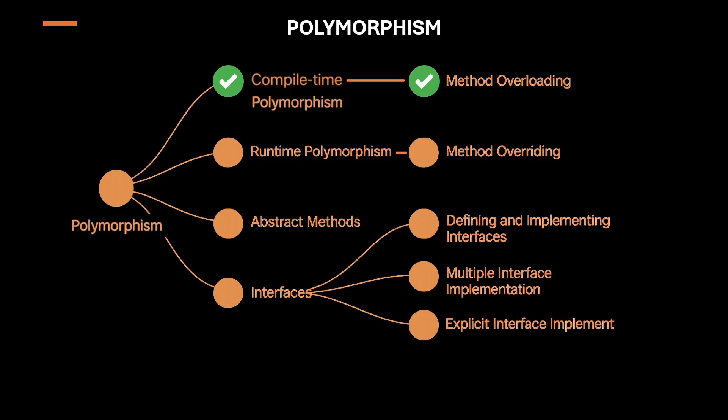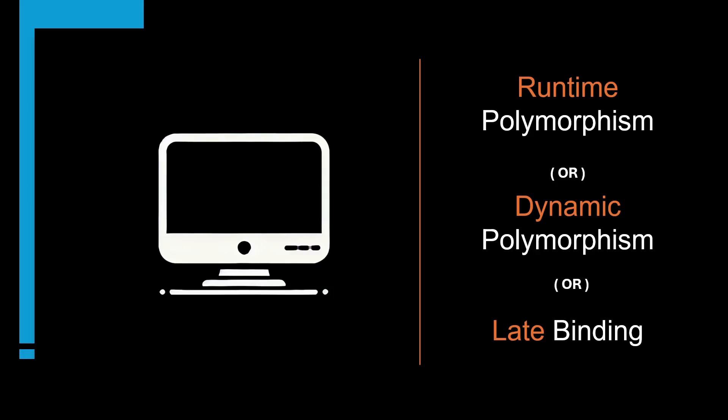Now let's move to runtime polymorphism. Runtime polymorphism, also called dynamic polymorphism or late binding, is where method calls are resolved at runtime rather than at compile time. This powerful feature allows programs to determine which method implementation to execute while the application is running, enabling more flexibility and extensibility.